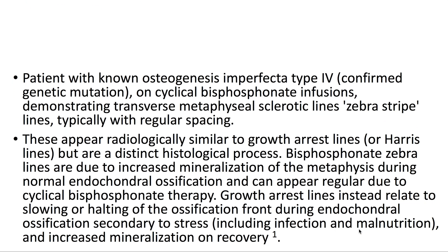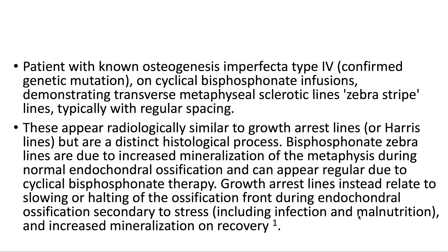This is a patient with known osteogenesis imperfecta type 4 on cyclical bisphosphonate infusions, demonstrating transverse metaphyseal sclerotic lines, or zebra-stripe lines, typically with regular spacing.